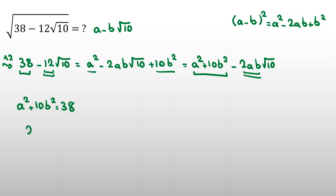2ab equal to 12. If you divide both sides by 2, ab equal to 6.